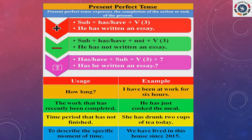For a recently completed task, present perfect is used — 'He has just cooked the meal.' And for a time period that has not finished, present perfect is used. For example, 'She has drunk 2 cups of tea today' — today hasn't finished yet, she can drink more. So present perfect is used to describe that.